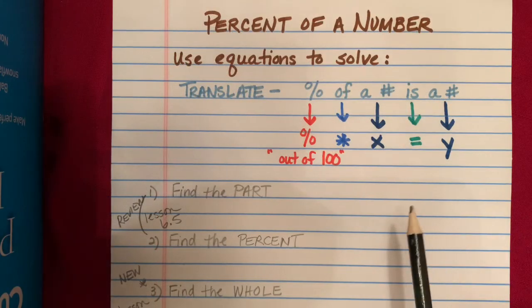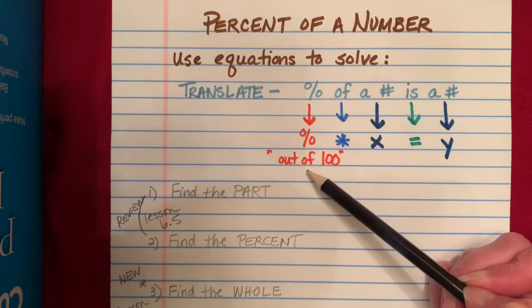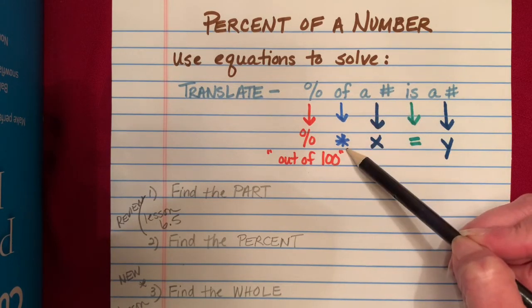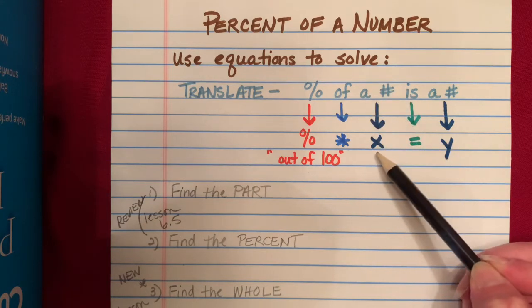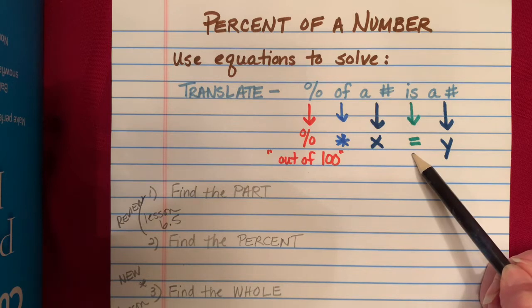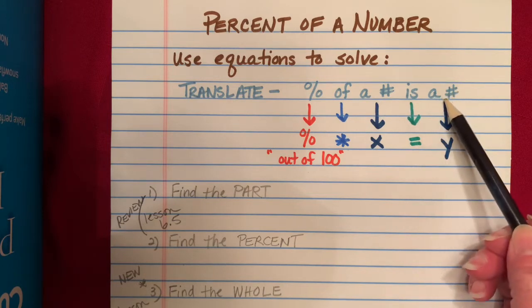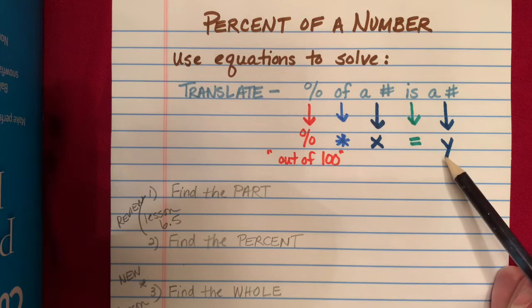Let's review our translation. Percent, remember, is out of a hundred. Of means to multiply. A number, if we don't know it, we substitute in a variable like X. Is means equals, and another number, again if we don't know what it is, we substitute in a variable like Y.